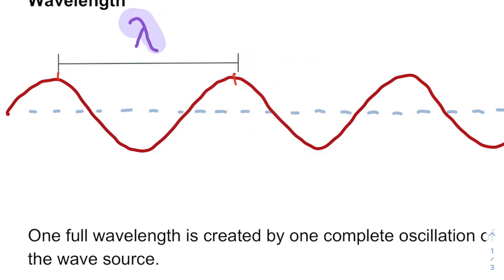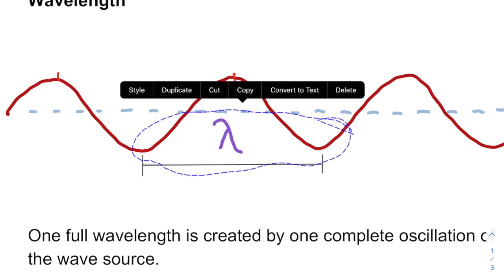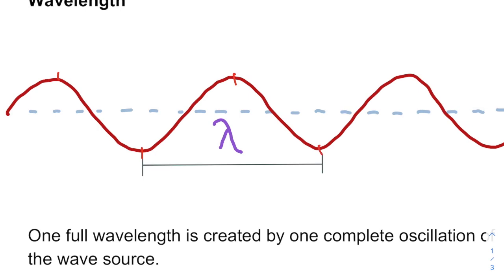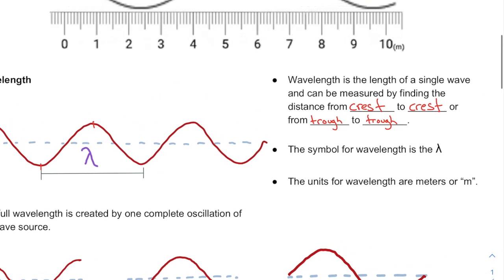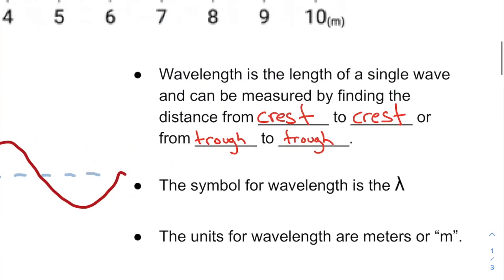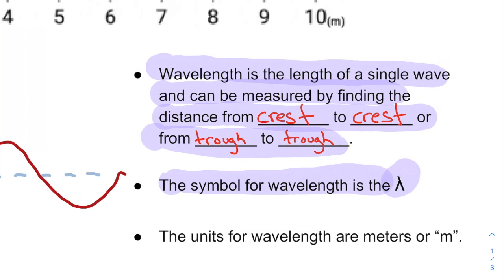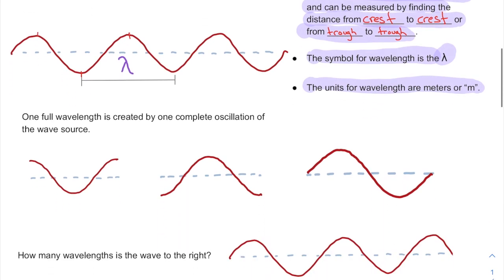This symbol here, this is the Greek symbol lambda. And it's just the Greek symbol for wavelength. It's just a shorthand way of writing it. Now, if I look at this distance here, if I bring this little guy down here, it's also the distance from trough to trough because that's one complete cycle as well. So wavelength is the length of a single wave and can be measured by finding the distance from crest to crest or from trough to trough. The symbol is the Greek letter lambda. And the units for the wavelength is the meters. So how long is it in meters?